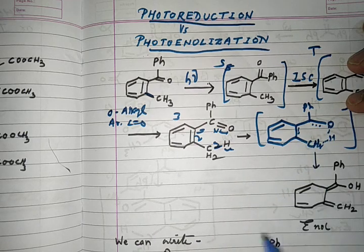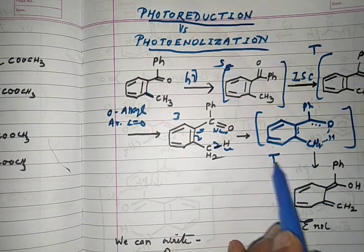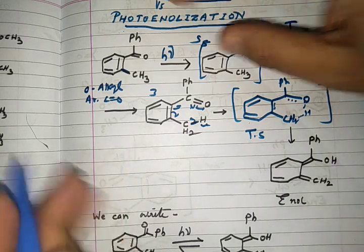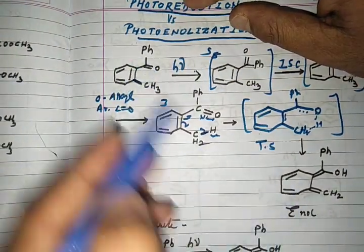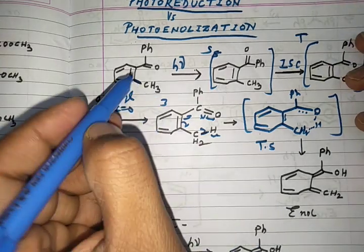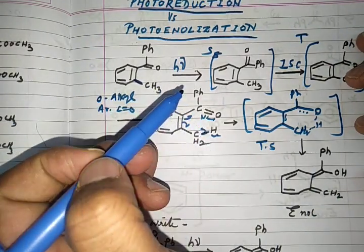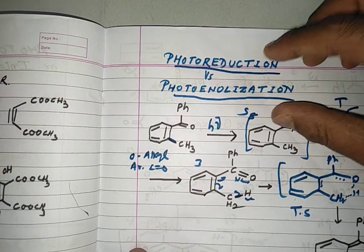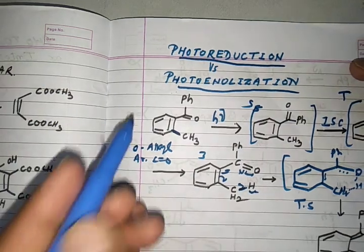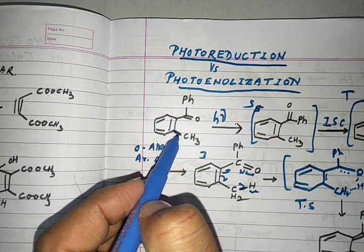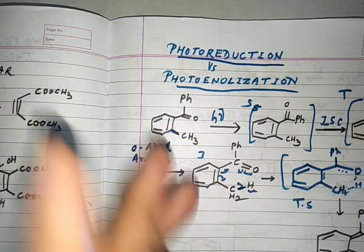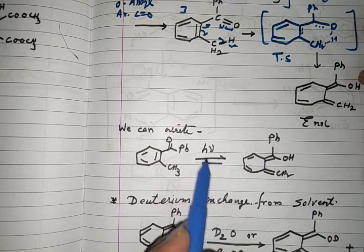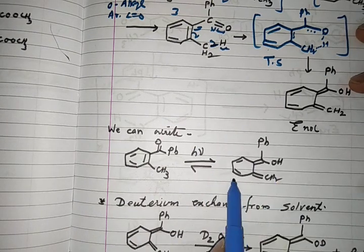The six-membered transition state results in the formation of an enol. This enol comes from the carbonyl compound, and therefore the process is called photoenolization — the conversion of a ketone into an enol using light energy. The key condition to remember is that only ortho alkyl aromatic carbonyl groups show this reaction.